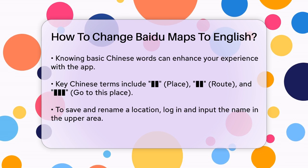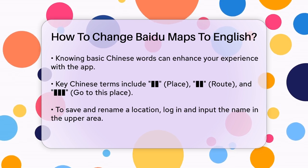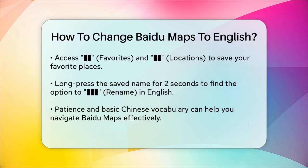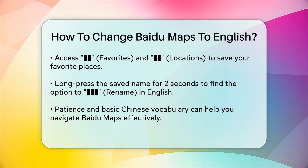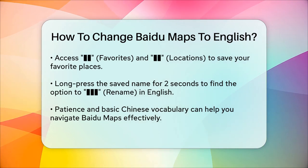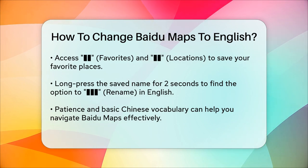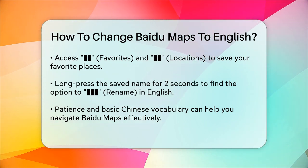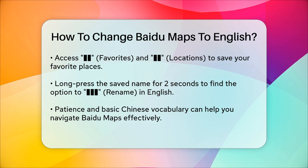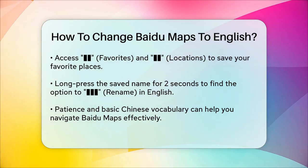To save a location and rename it in English, you can follow these steps. After logging in, input the name of the location into the upper search area. Save it as your favorite place by clicking on your profile picture, then find "shou cang" (favorites) and "di dian" (locations). Long press the saved name for two seconds to find "tong ming" (rename), and then rename the location in English.